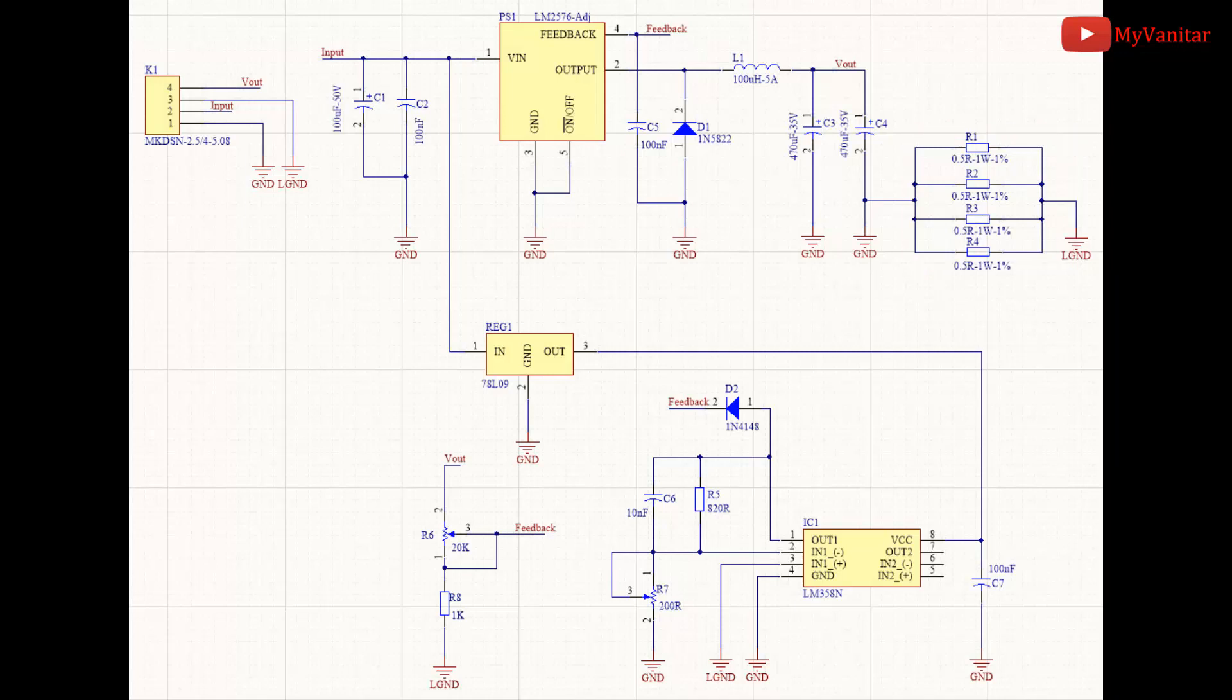The potential difference on the shunt resistor gets amplified by the IC1 and injected to the feedback pin by a 4148 diode.